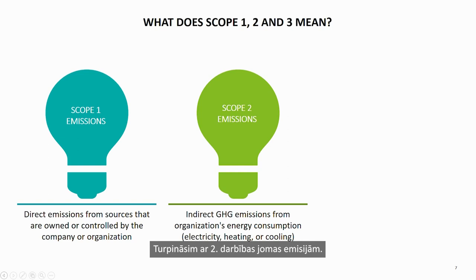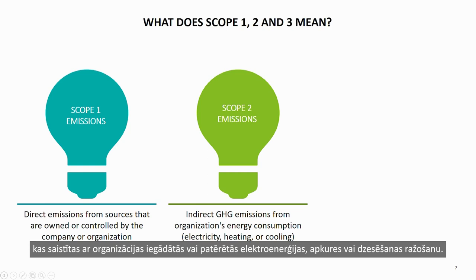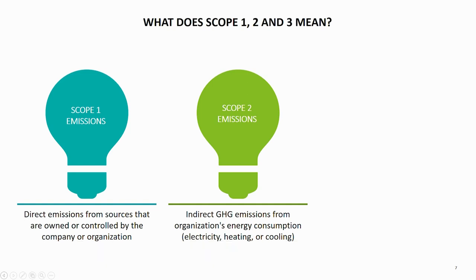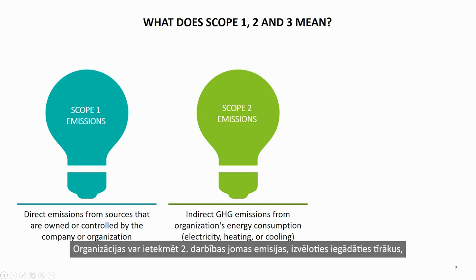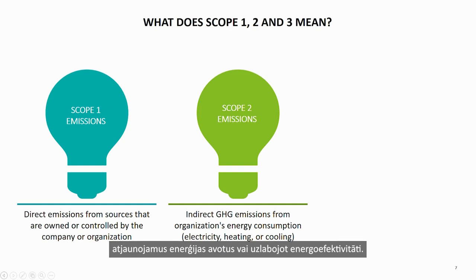Scope 2 emissions are indirect greenhouse gas emissions associated with the generation of electricity, heating, or cooling that an organization purchases or consumes. While the organization does not directly control the sources of these emissions, they are related to the organization's energy consumption. Organizations can influence Scope 2 emissions by choosing to purchase cleaner renewable energy sources or by improving energy efficiency.